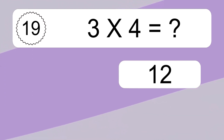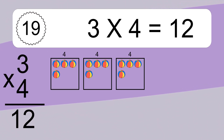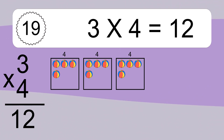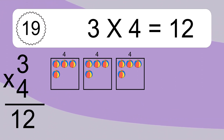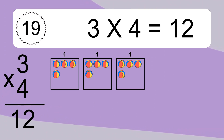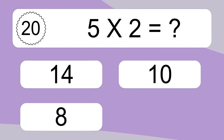3 times 4 equals what? 3 times 4 equals 12. We have 3 boxes, and each box has 4 colorful balls inside. If you count all the balls in all the boxes together, you will have 3 times 4 balls. This equals 12 balls.